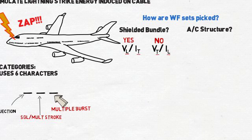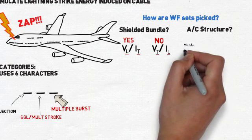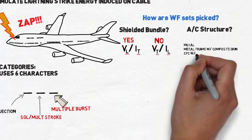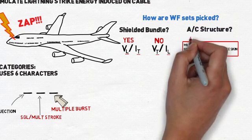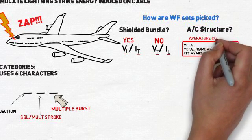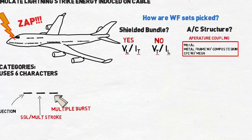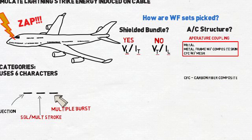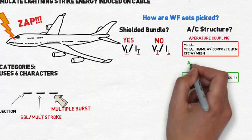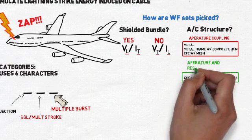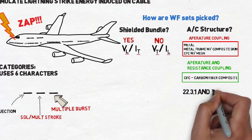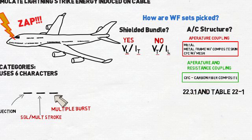Aircraft structure also plays a role. If the aircraft near your product is metal, metal framework with composite skin, or carbon fiber composite with mesh metal skin, then the test set should be aperture coupled waveforms. Similarly, if the aircraft structure near your product is made from carbon fiber composite without metal mesh protection, you'll likely test to the aperture resistance coupled waveforms. This is explained in section 22.3.1 and listed in table 22-1.